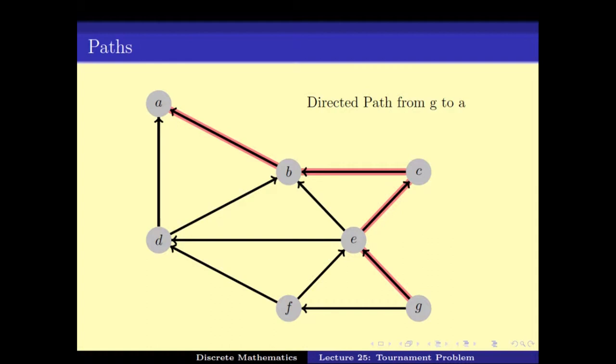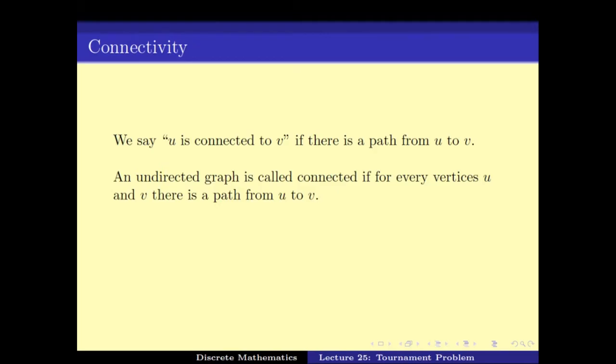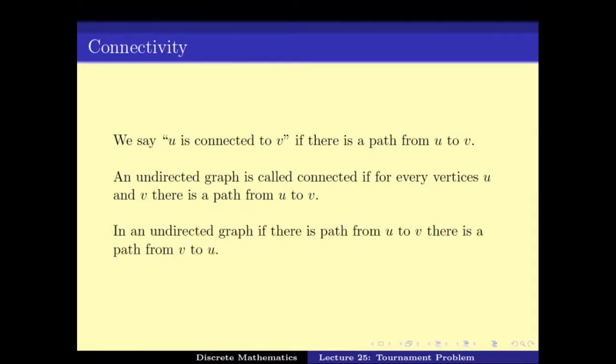We say u is connected to v if there is a path from u to v. In an undirected graph, this concept of connectedness forms an equivalence relation — if there is a path from u to v, there is also a path from v to u. An undirected graph is called connected if every pair of vertices is connected to each other by a path.